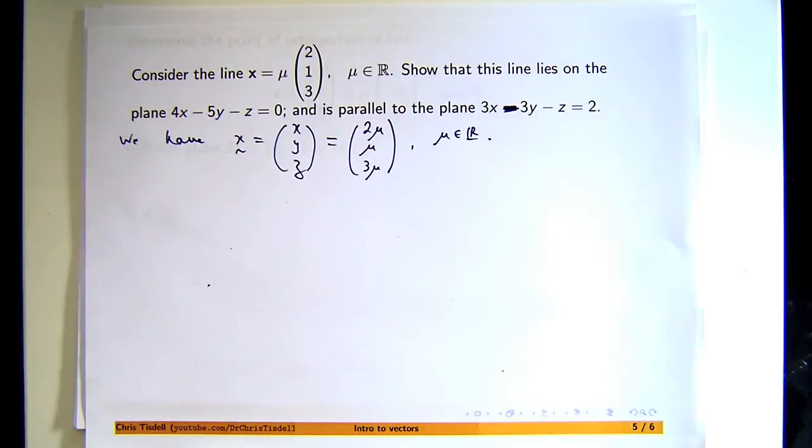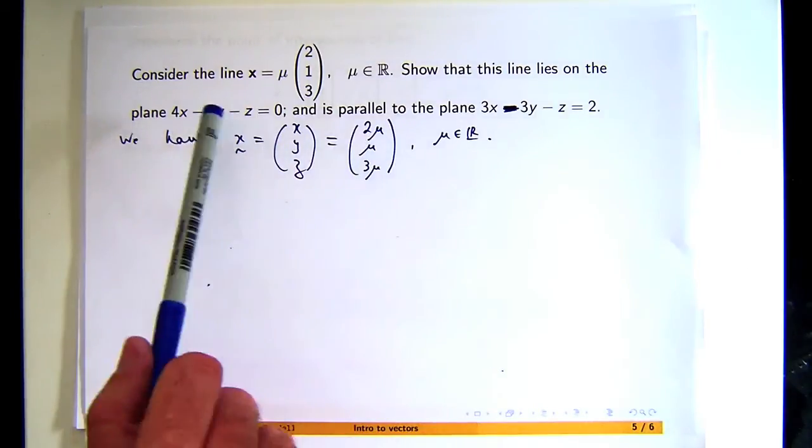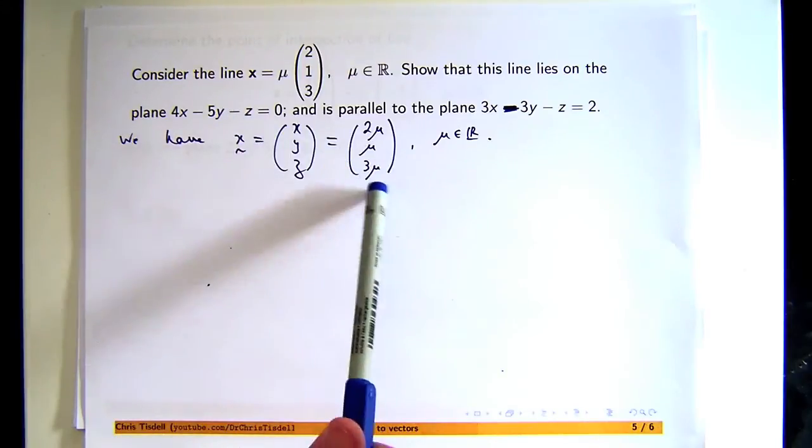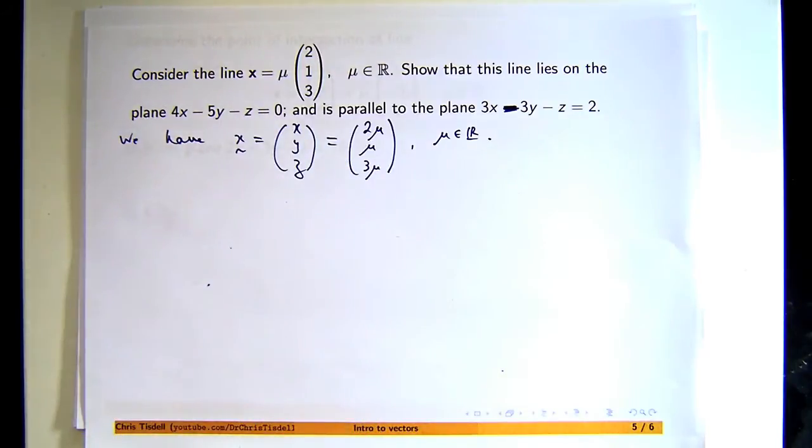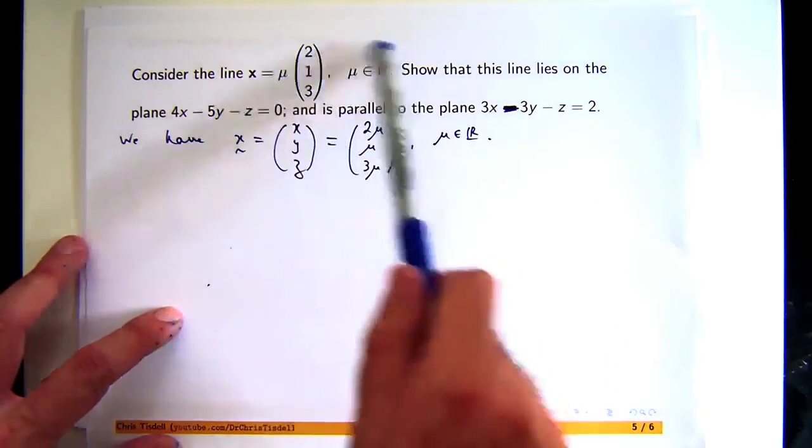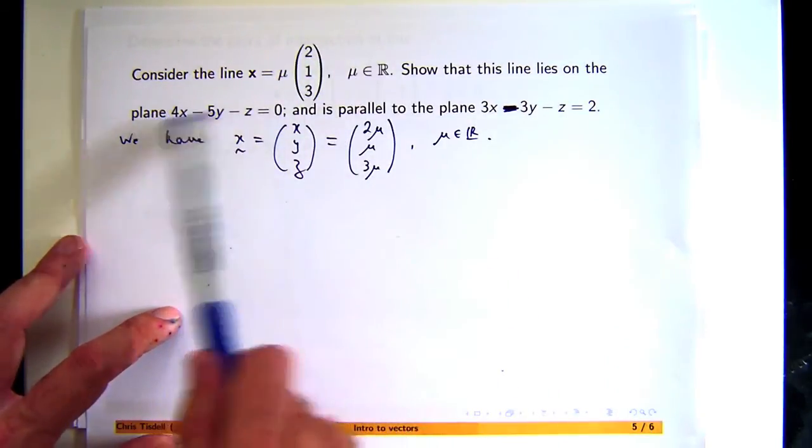is just algebraically replace x with 2μ, y with μ, and z with 3μ, and hopefully the equation balances. If it does, then you know that this line lies on this plane.